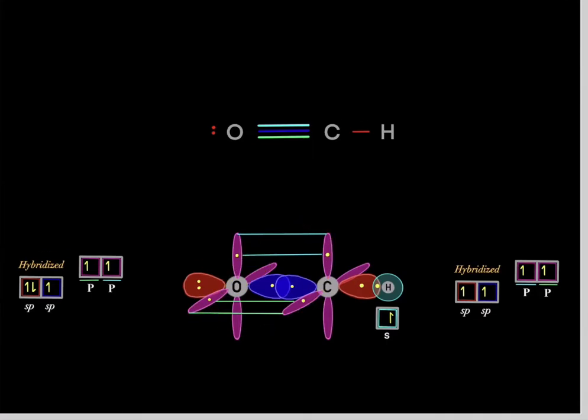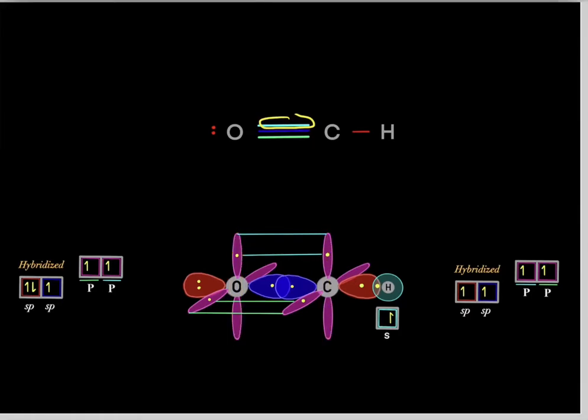Whenever you have an extra bond, you must have p-orbitals. P-orbitals form extra bonds — that's the key principle.